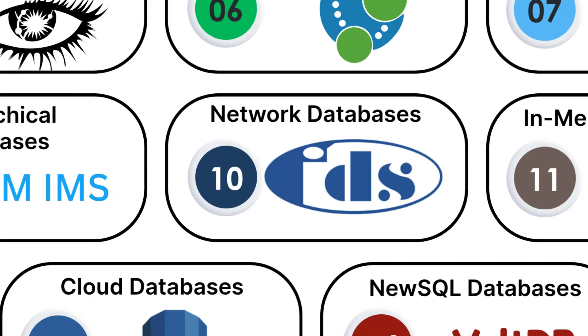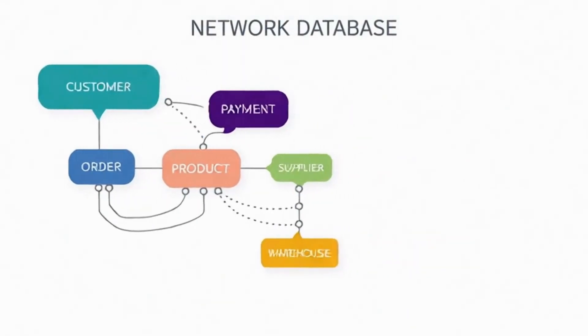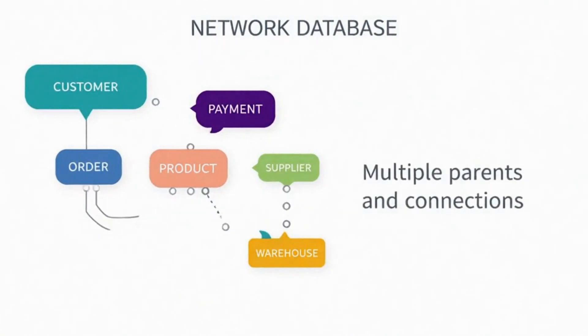Number ten, network databases. Network databases are like hierarchical databases, but more flexible. Instead of strict parent-child relationships, data can have multiple parents and connections, creating a network-like structure.